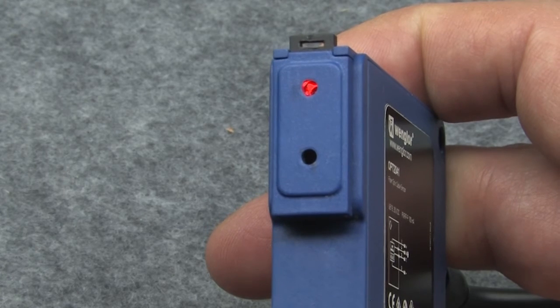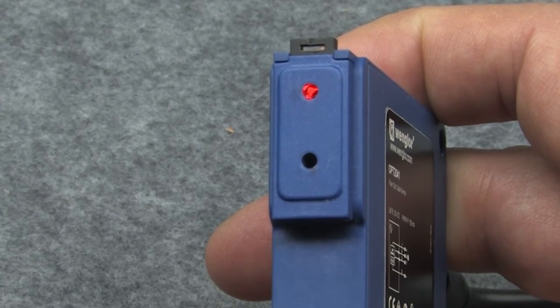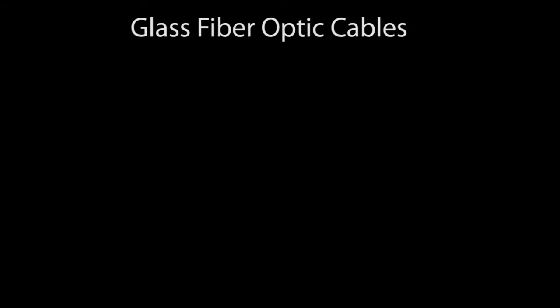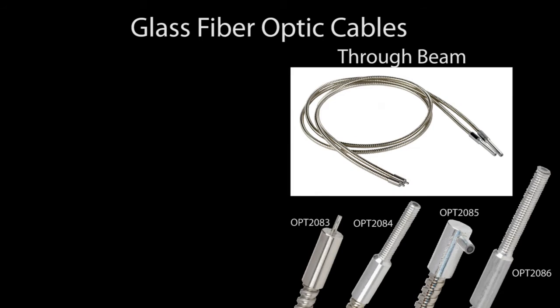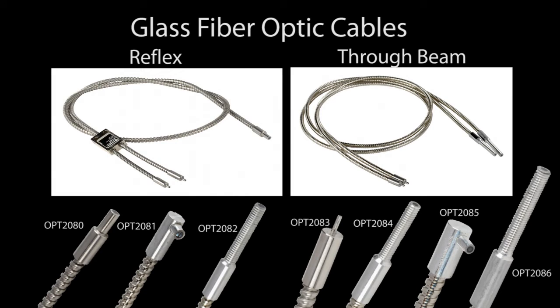With parallel fibers, it doesn't matter which hole you plug them into. There is also a variety of glass fiber optic cables in both through beam and reflex styles. These are ideal for harsh environments because of the steel jacket and because glass fibers are not as susceptible to corrosive environments as the plastic fibers are. Glass fibers can also handle higher temperature environments, although the plastic ones are a little better at the low end.